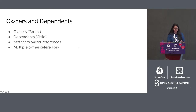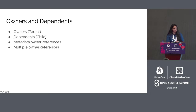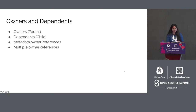The garbage collector controller builds dependency graphs using owner references of objects. Some Kubernetes objects are owners of other objects — for example, a replica set is the owner of a set of pods. The owned objects are dependents of the owner objects. Every dependent object has a metadata.ownerReferences field that points to the owning object. Kubernetes sets the owner reference automatically in some cases, such as when you create a replica set. It also allows users to manually specify owner references.